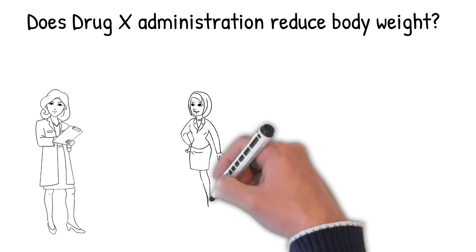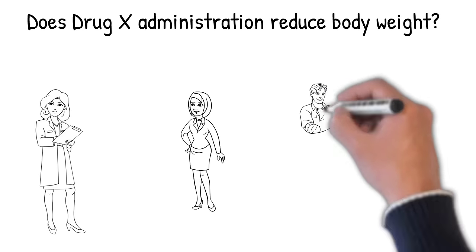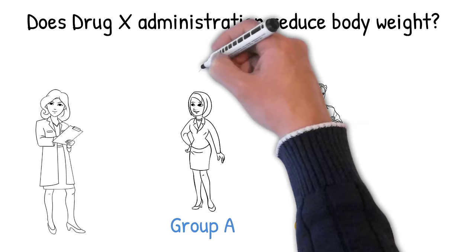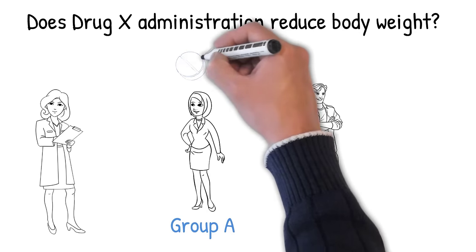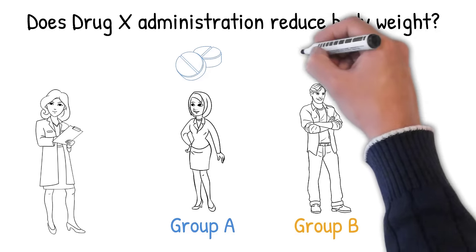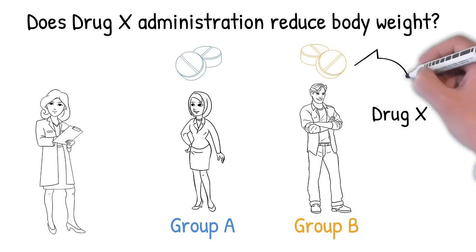So you randomly sample a collection of volunteers and randomly assign them into two groups, group A and group B. By the way, if you don't know the difference between a sample and a population, it might be worth checking out the previous video. You give group A a placebo. In other words, this contains no active ingredients. Group A are therefore the control group. And you give group B the new drug, drug X.